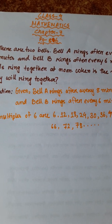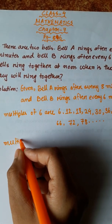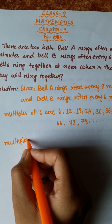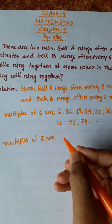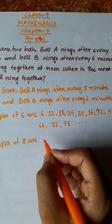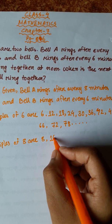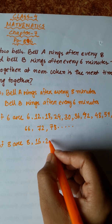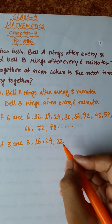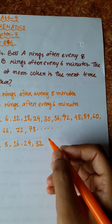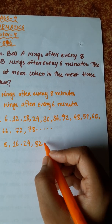Multiples of 8 are: 8×1=8, 8×2=16, 8×3=24, 8×4=32, and more.